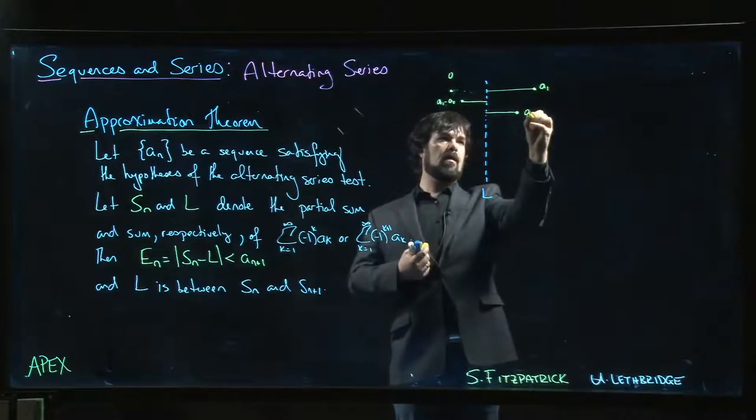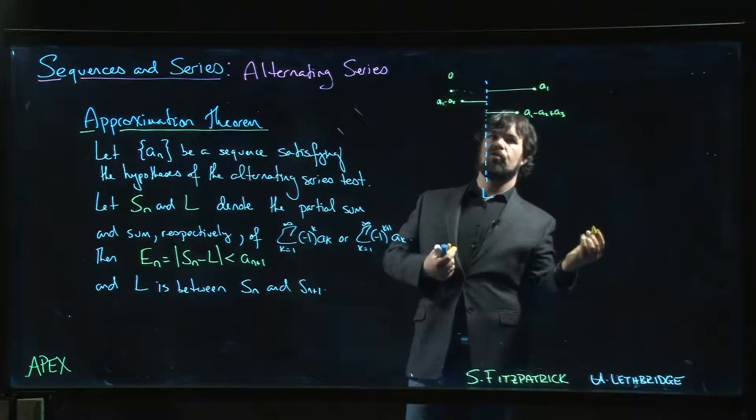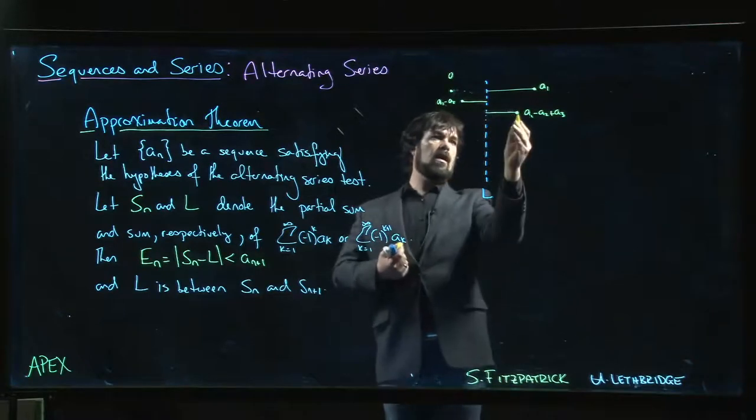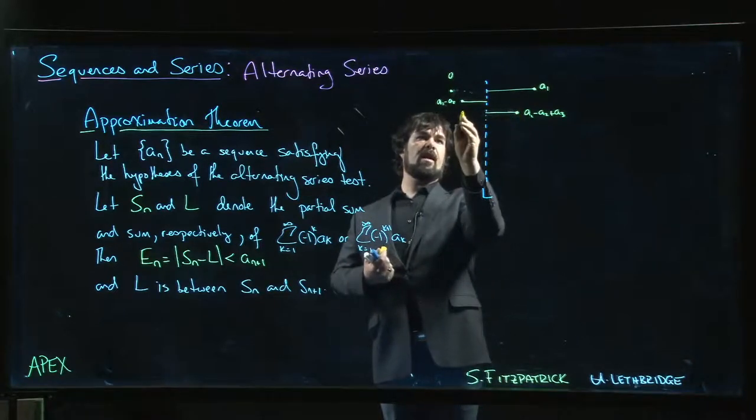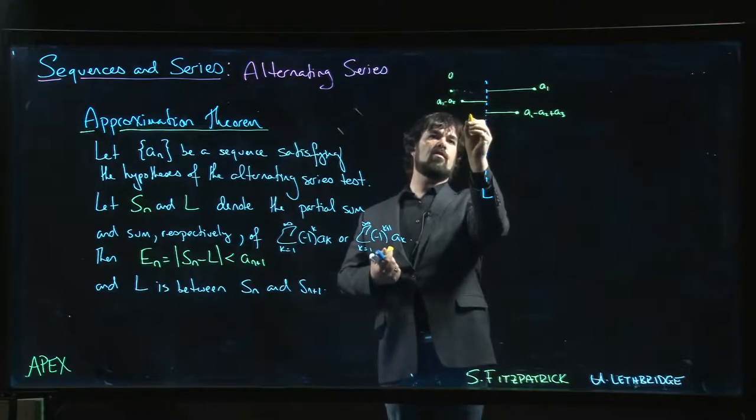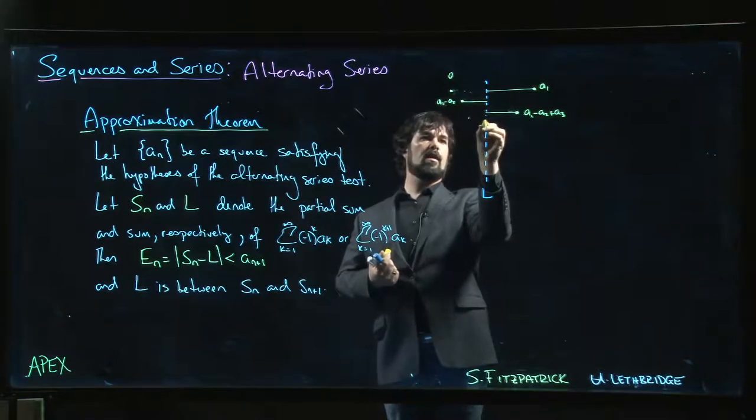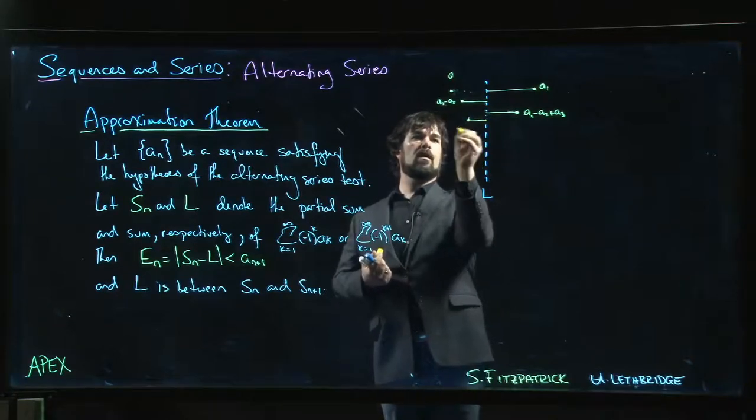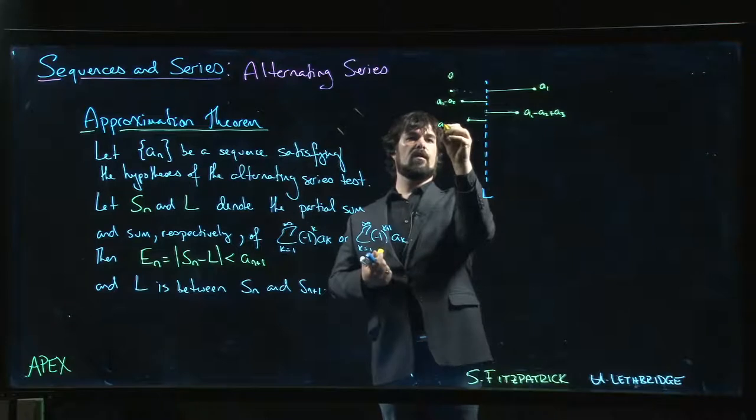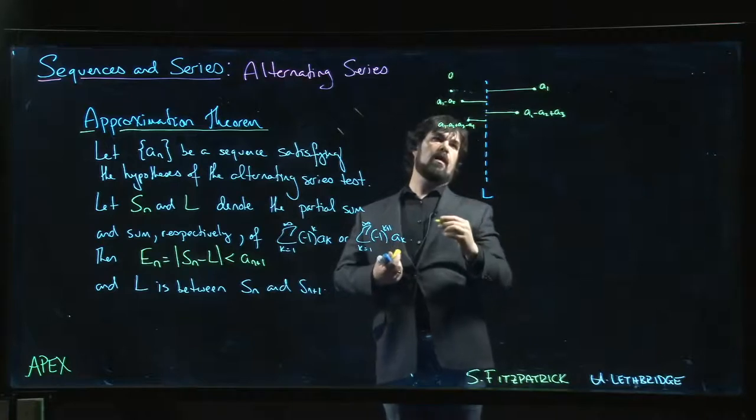So here will be a1 minus a2 plus a3. And then you subtract off a4, and a4, well it can't take you back that far because it's smaller than a3 was, so maybe it gets you to here.